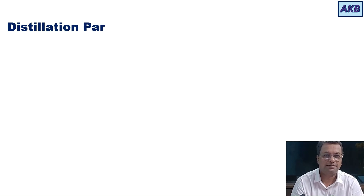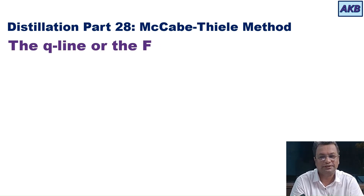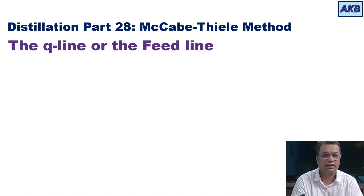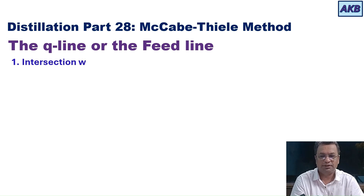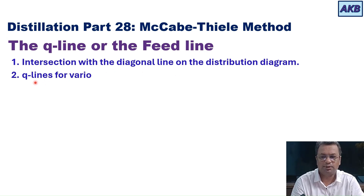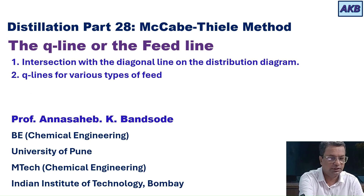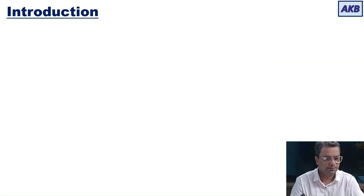Hello friends, welcome back to my YouTube channel. Today this will be the 20th part of my discussion on distillation, continuing with the McCabe-Thiele method. Today I will be discussing more about the Q-line or the feed line. In my previous video I derived the equation for the feed line or the Q-line. Today I will be talking about its intersection with the diagonal line on the distribution diagram, and second, how Q-lines are plotted on the distribution diagram for various types of feed.